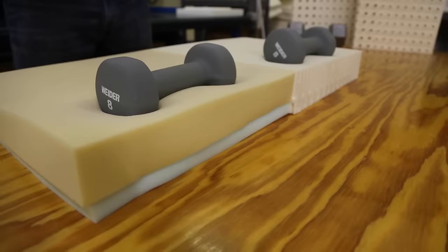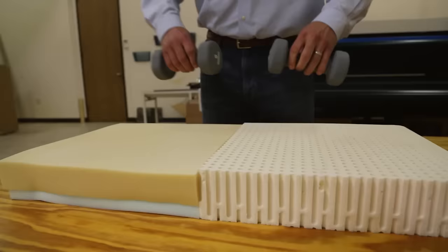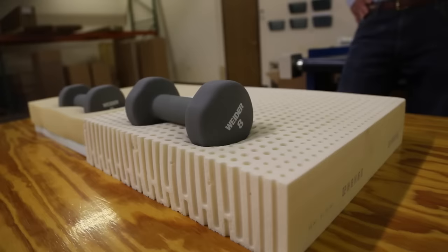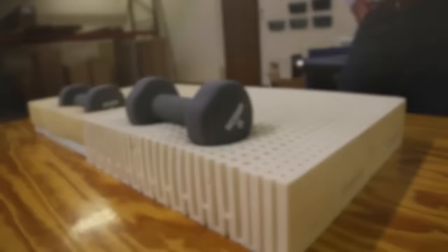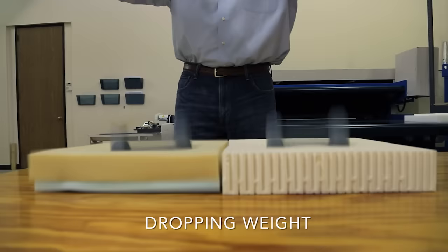The next demonstration is support. When we place a weight on the memory foam, it has a low resilience and easily adjusts to the body's contours. The weight is totally enveloped by the memory foam, whereas when we place the weight on the latex, it conforms to the weight but pushes it back up.